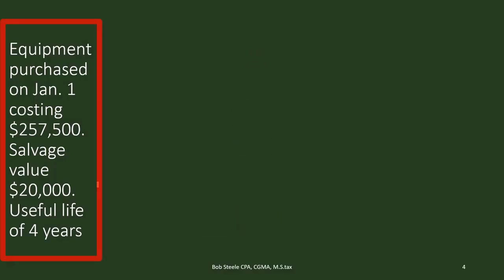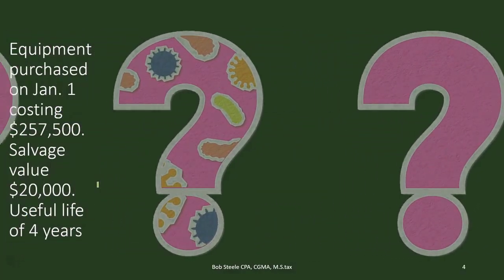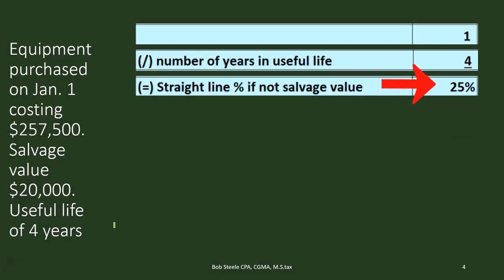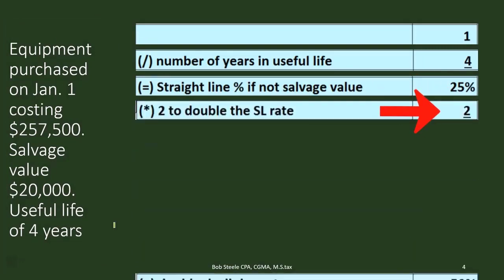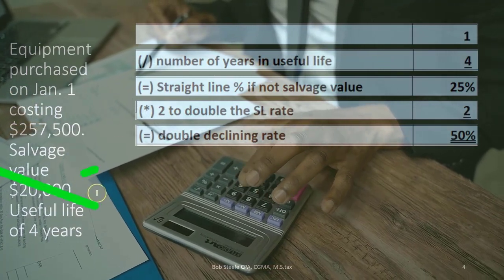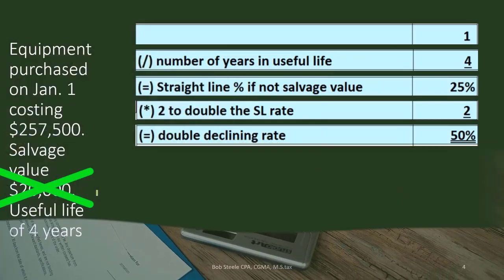You want to set up a systematic calculation format. The short method is to take 1 divided by the number of years — 1/4 in this case — giving 0.25 or 25%. If it were a three-year property you'd use 1/3, or 1/7 for seven years. Then double it to get 50%. Remember, the 25% would depreciate the asset down to zero with no salvage value, so we double it to get the double declining rate.